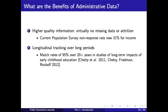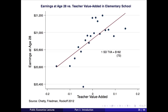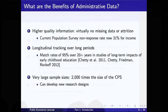A second feature of administrative data is longitudinal tracking over long periods. We're just starting to get evidence on long-term impacts of policies because previously we lacked data. With administrative data, by linking people via identifiers like Social Security numbers, you can track people over 20+ years. For example, studies of long-term impacts of early childhood education — examining how the quality of teachers you had in kindergarten or third grade affects your earnings at age 28. We find that elementary school teaching quality does have substantial effects on earnings, with implications for how to hire and incentivize teachers.